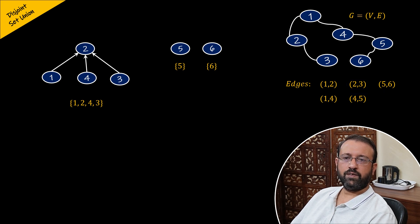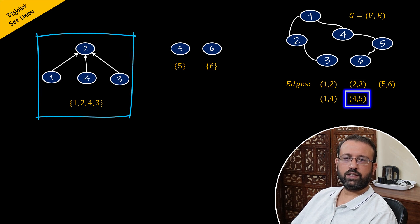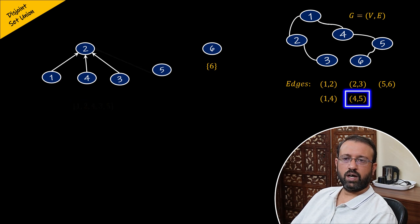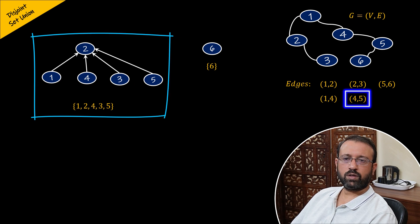Then we have an edge between vertex four and vertex five. Vertex four belongs to the set which contains one, two, four, and three, and vertex five belongs to set five, so they are in different sets. Therefore, we will perform union of the set containing one, two, four, and three, and set five. After the union operation, vertices one, two, four, three, and five will be in the same set.